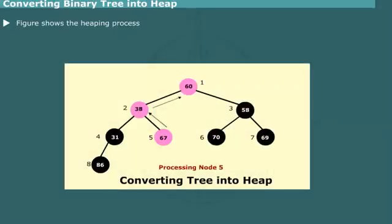Next, node 5 is processed. It contains element 67. 38 and 67 are swapped. Node 2 now contains 67, which is larger than 60 in the parent root node. Thus, 67 and 60 are exchanged so that element 67 moves to the top.